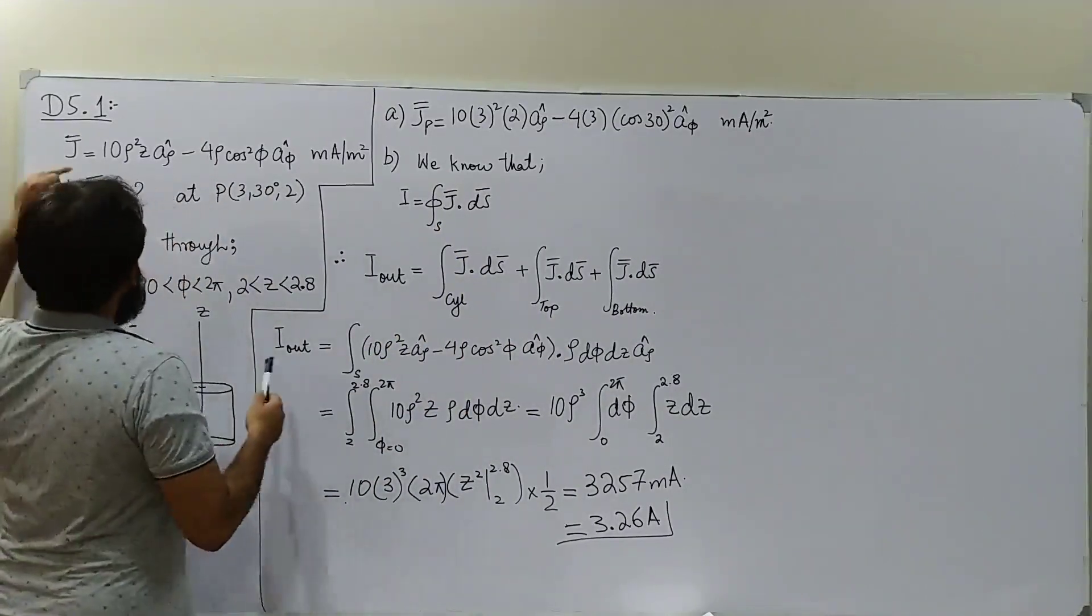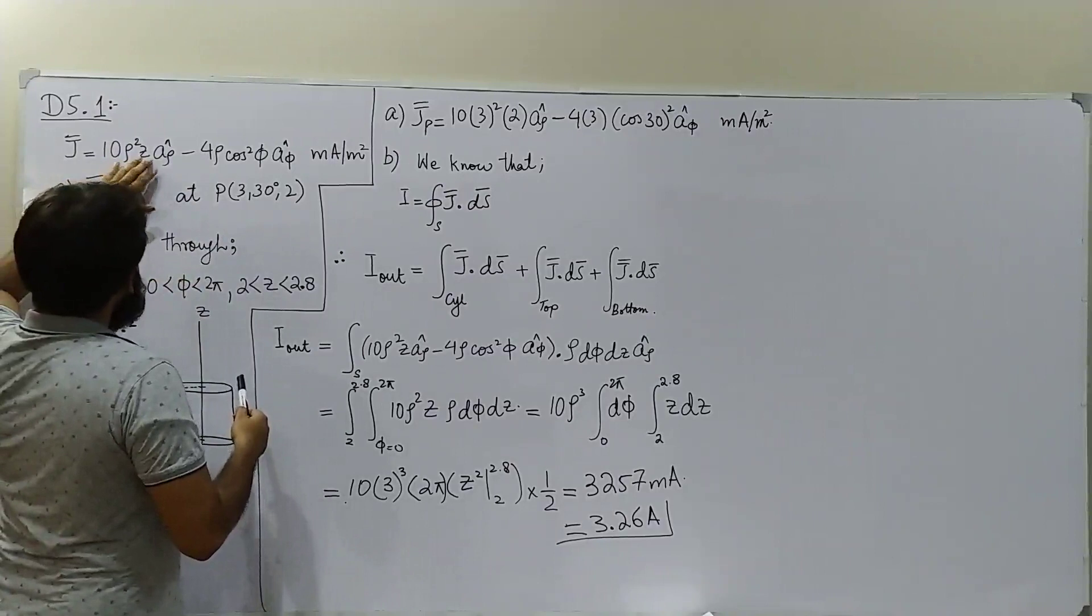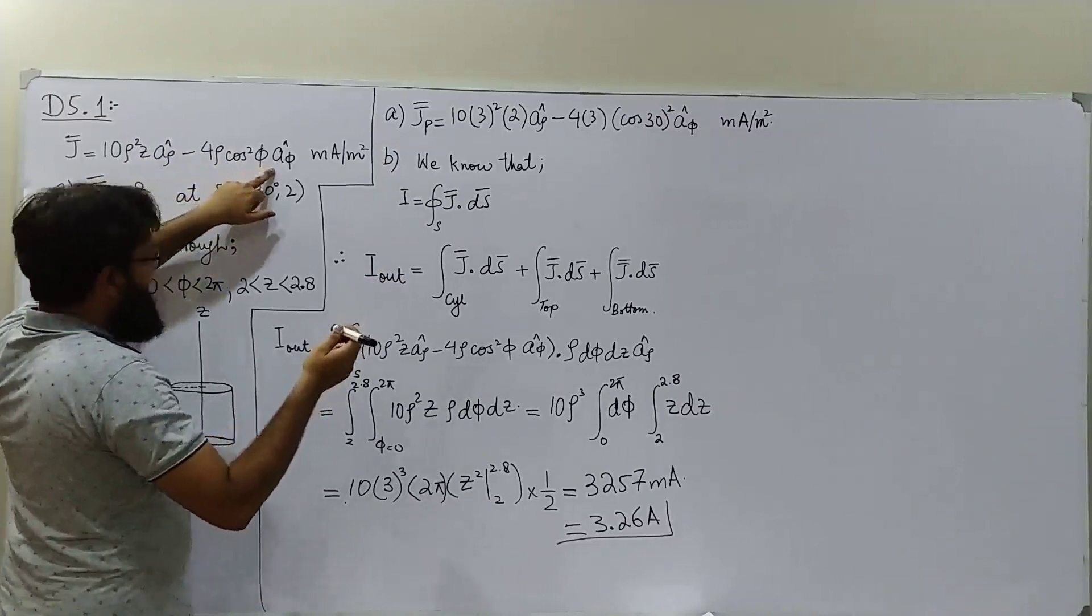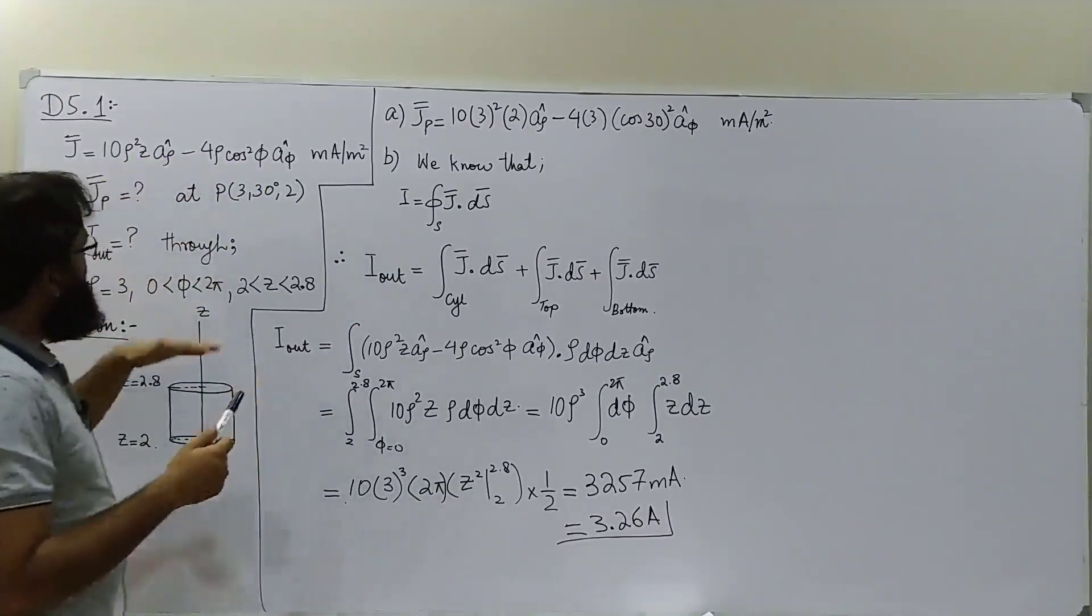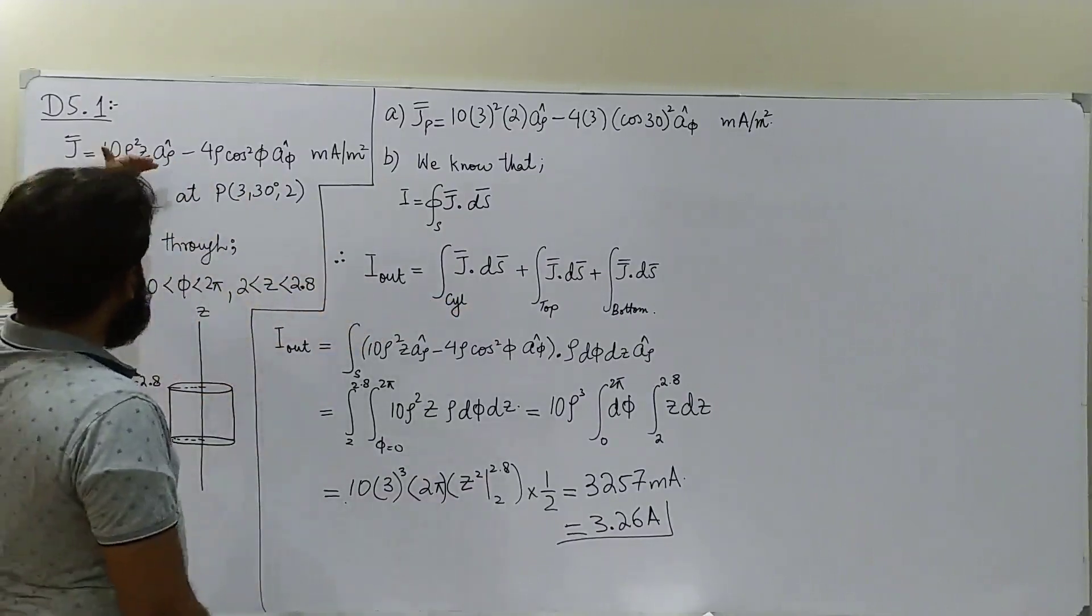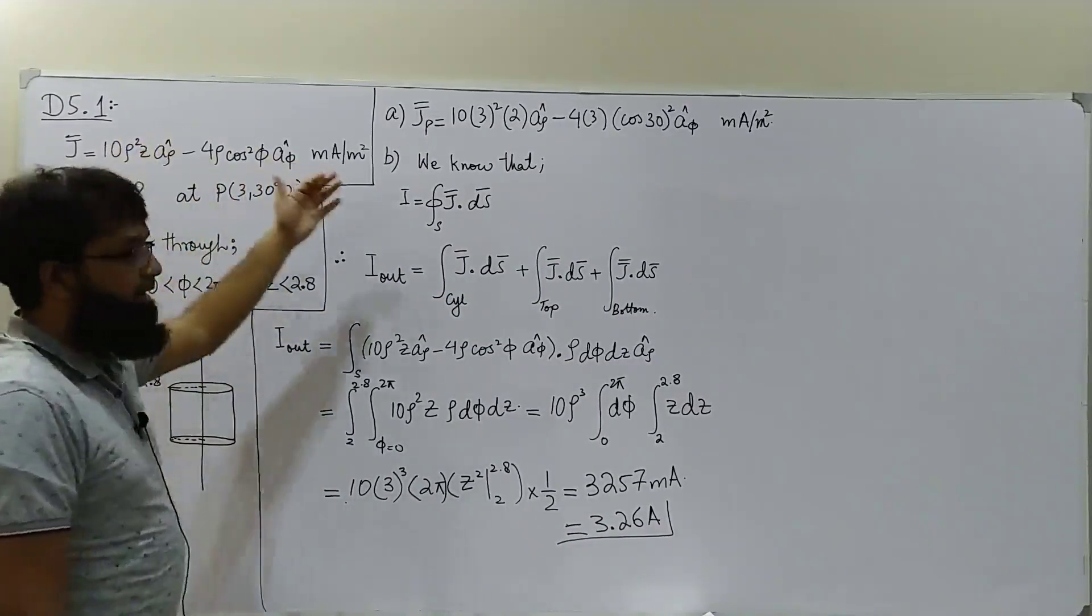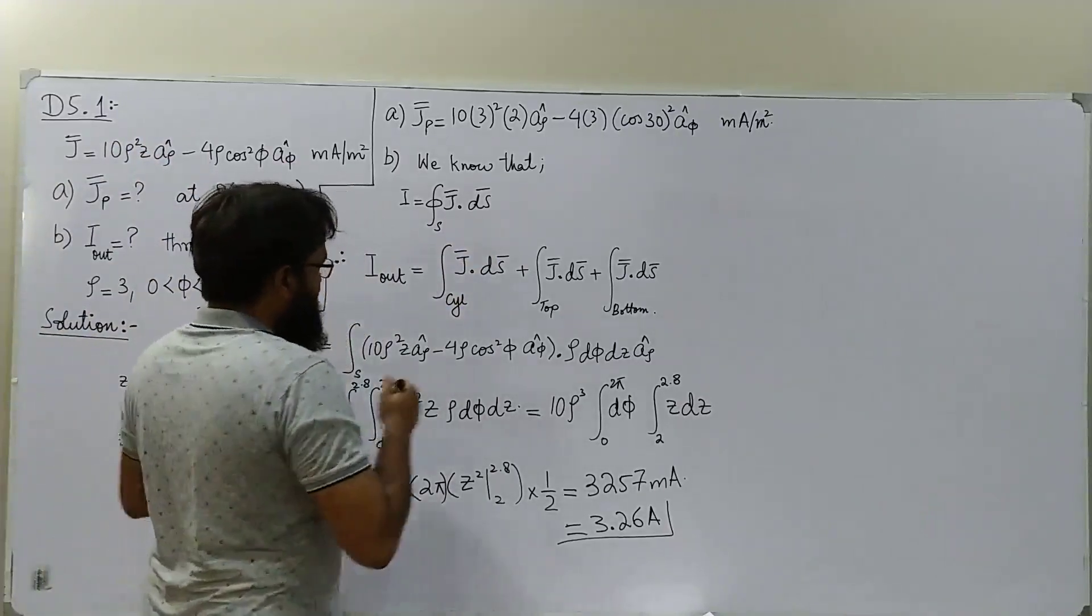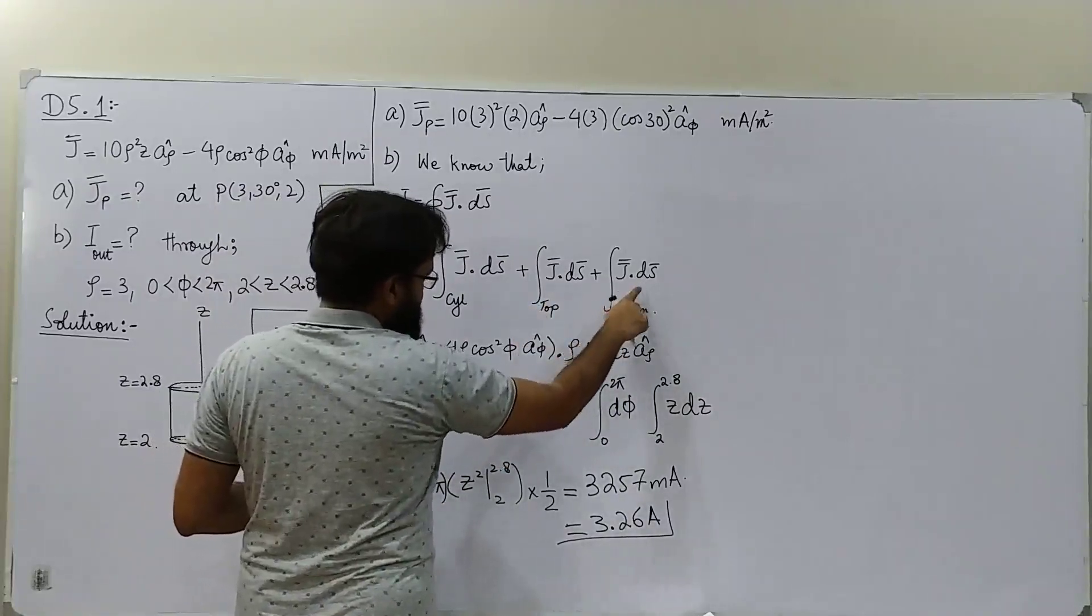Since we have the J, the current density, whose components are aρ and aφ only, we know that aρ lies in the horizontal plane, aφ also lies in the horizontal plane. So horizontal component plus another horizontal component is definitely going to give us a resultant current density which will be on horizontal plane. So any vector which is perpendicular to horizontal plane in cylindrical coordinate system is definitely az. The formula for ds for the top and formula for ds for the bottom, they both are going to have az in it.